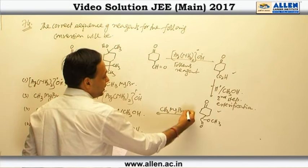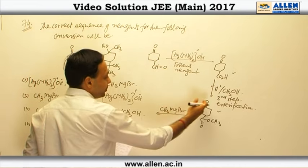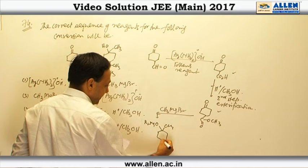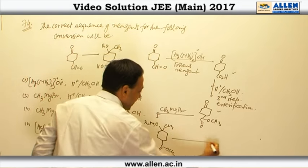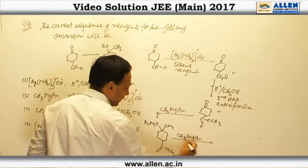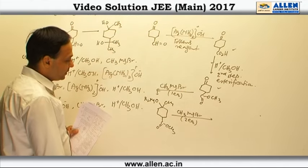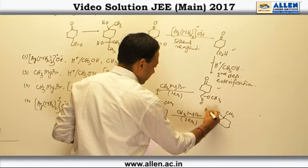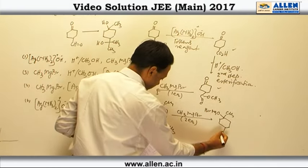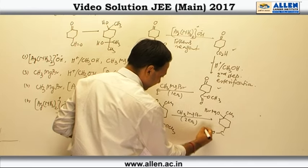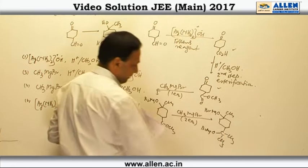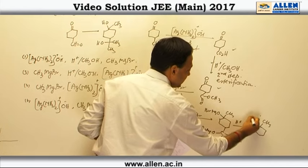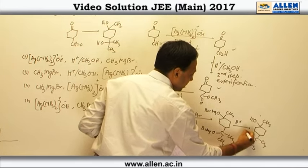After that, it reacts with Grignard reagent CH₃MgBr (methyl magnesium bromide). First it reacts with the C=O (ketone), and then we add another two equivalents of CH₃MgBr, which reacts with the ester system. Step by step we add Grignard reagent, getting different products. Finally, we add H⁺ — the OMgBr groups are converted into OH.